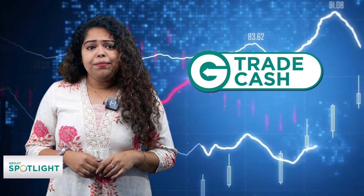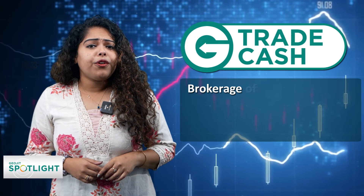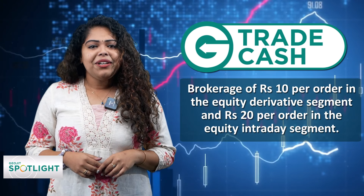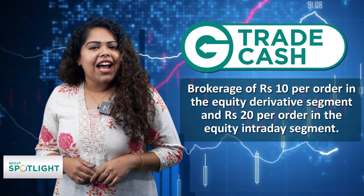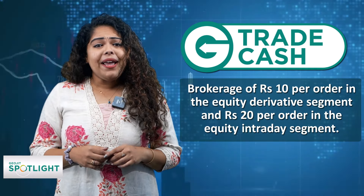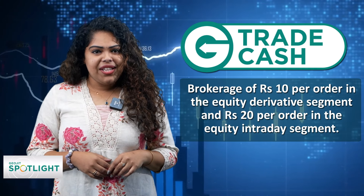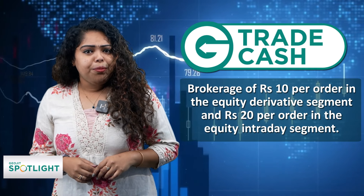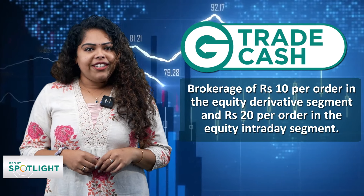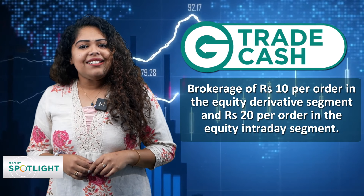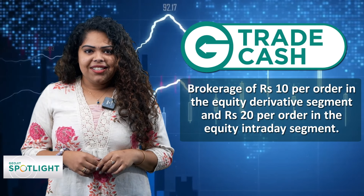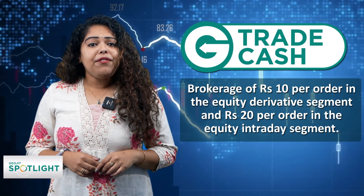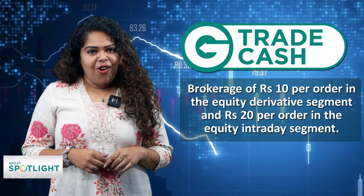G-Trade Cash Scheme offers a brokerage plan of 10 rupees per order based on the cash margin maintained with us in the equity derivative segment, and 20 rupees per order in the equity intraday segment. The same charges apply for any size order.